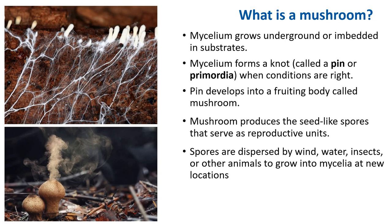The mycelium of a mushroom-producing fungus usually remains out of sight, underground, embedded in its substrate. A fungus may fruit year after year in the same place from the same mycelial body. When the conditions are right, the fungus may form a knot called a pin or primordia — shown here — which develops into a mushroom fruiting body.